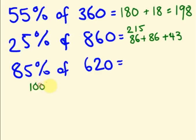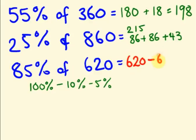Now 85 percent of 620: we find 100 percent and subtract 10 percent and 5 percent to get 85 percent. 100 percent of 620 is 620. 10 percent is 62 and 5 percent is 31. So 620 minus 62 minus 31 gives 527. This is the simplest way of studying percentage. I hope you got the tricks behind it. Thank you for watching.